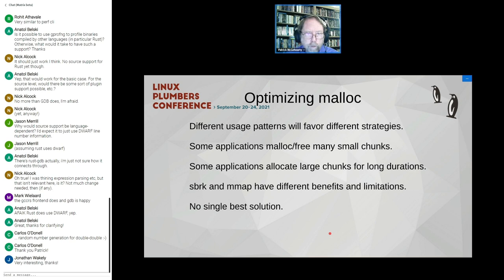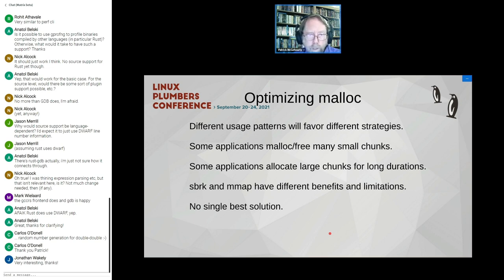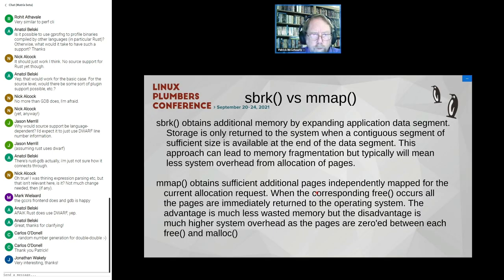Anytime you change a standard library's default settings, you will affect some applications — that's a challenge for deciding whether to make a change. Some applications malloc and free many small chunks at a highly variable rate; others request a large chunk and keep it for a long time. Internally, malloc uses both sbrk and mmap, which have different benefits and limitations. There's no single best solution, so it's helpful to know your options if malloc and free are consuming a lot of performance.